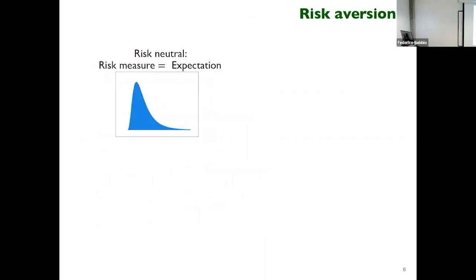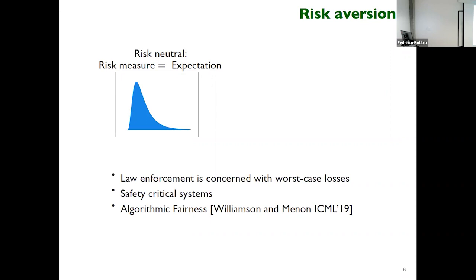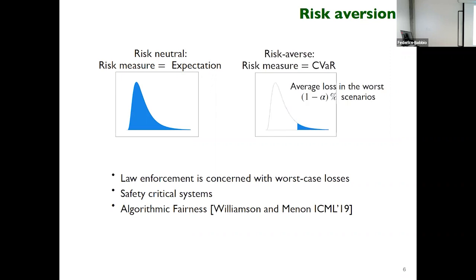Now let's look at risk aversion. In most of the literature, people consider expectation as a risk measure, meaning that policies are evaluated based on their average performance. But in many real-world applications like law enforcement, safety-critical systems, and algorithmic fairness, one is concerned about the tail of the distribution. One of the measures used is conditional value at risk, which is the average loss in the worst (1 - alpha) percent of scenarios. If alpha equals 0, it reduces to expectation. So this was a crash course on ambiguity aversion and risk aversion.